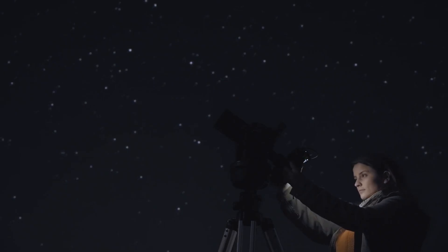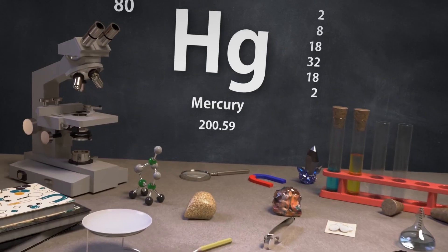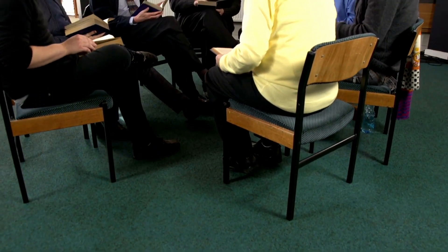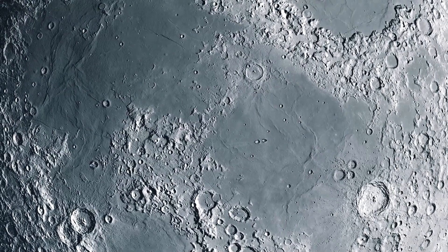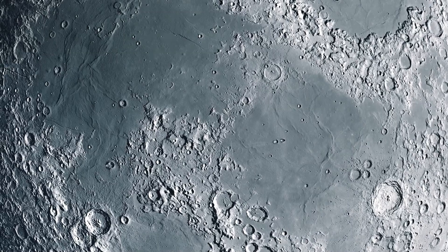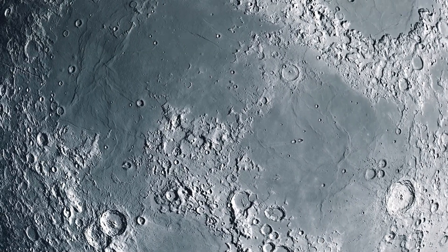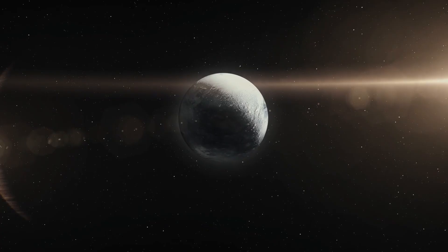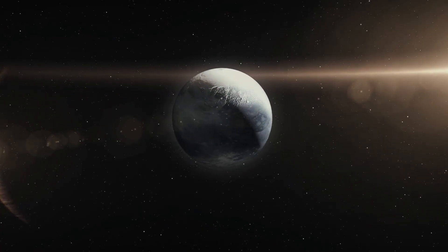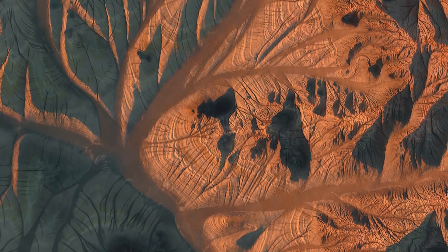And if 3i Atlas carries organic molecules, or worse, synthetic biology embedded in its outgassing trails, the fusion of Earth-independent evolution with Martian biology could result in genetic contamination on a planetary scale. Some biologists call this panspermia in reverse, not life spreading from Mars to Earth, but life being seeded into Mars deliberately. It raises a terrifying question. What if the goal was never destruction? What if the object is a delivery system, and Mars is the incubator? As 3i Atlas approached its closest point to Mars, the James Webb Telescope locked onto the object for one final ultra-deep scan.